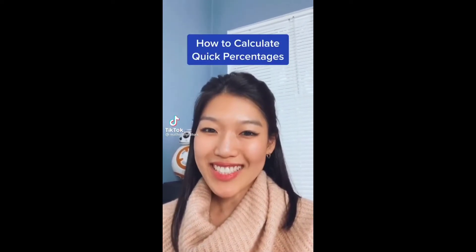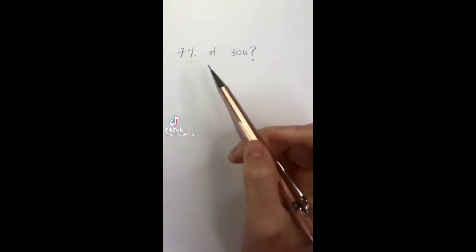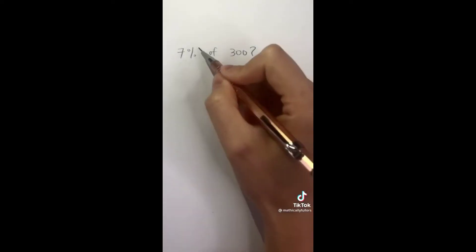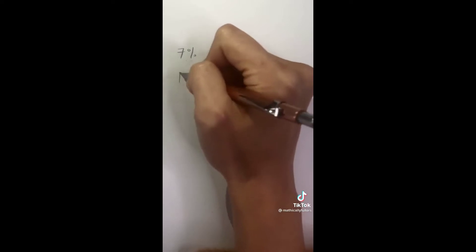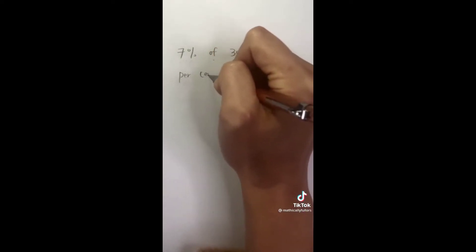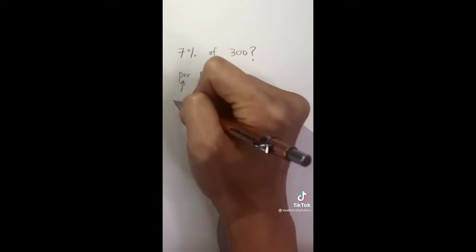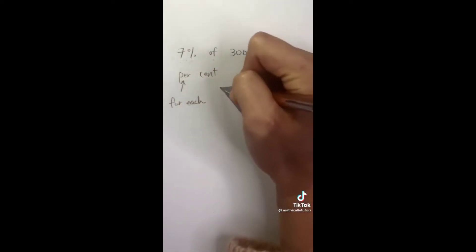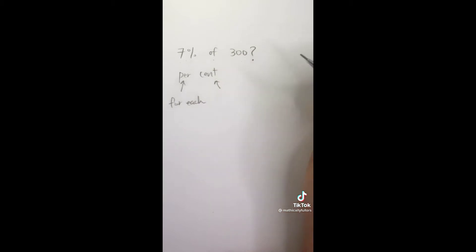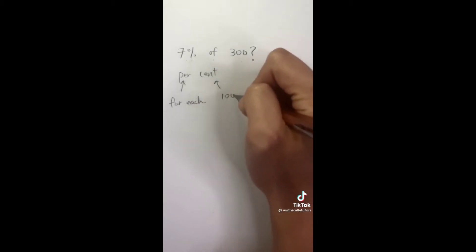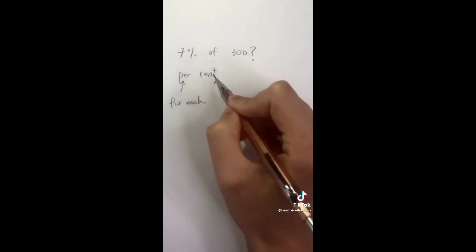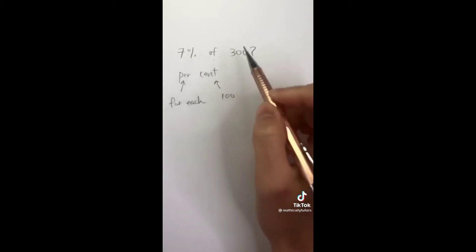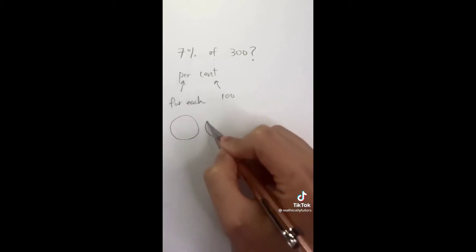How to calculate quick percentages. What is seven percent of 300? In order to do this, we have to know what percent means. Let's break this word up: 'per' and 'cent.' Per means 'for each,' and cent is a Latin root word that means 100. So in the word percent, it literally means 'for each 100.'